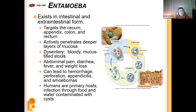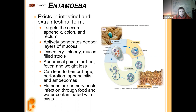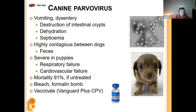Entamoeba has intestinal and extraintestinal forms, targeting the cecum, appendix, colon, and rectum. It penetrates deeper layers of mucosa, leading to dysentery — bloody mucus-filled stools, abdominal pain, diarrhea, fever, and weight loss. It can lead to hemorrhage, perforation, appendicitis, and amoebomas — swelling and overgrowth of tissue where the amoeba has taken hold. Humans are the primary hosts, and infection comes from food and contaminated water via cysts.